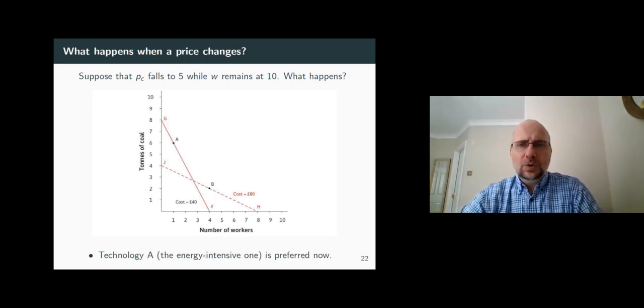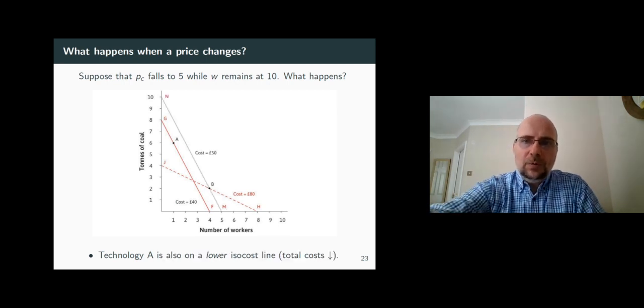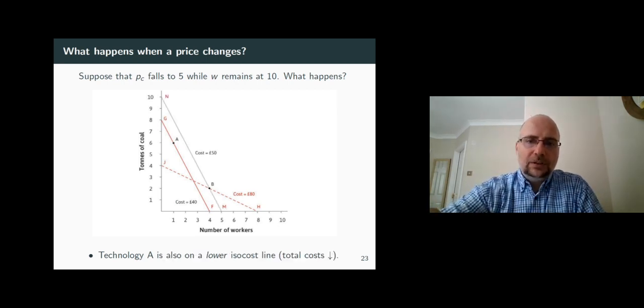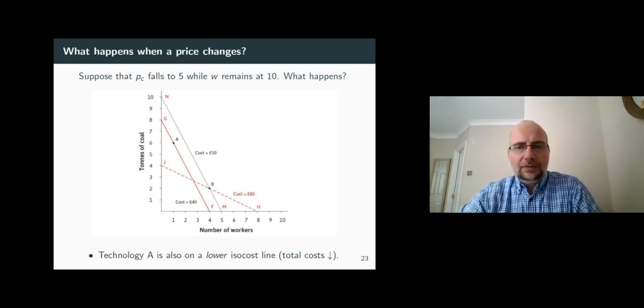So, we switched to a different technology, which achieves the same amount of output with lower cost of input. So, why don't we just stick to our old technology? After all, it is saving us costs. Now, with the lower cost of coal, notice what will happen if we stick to technology B under the new prices.